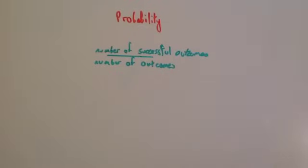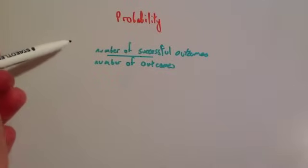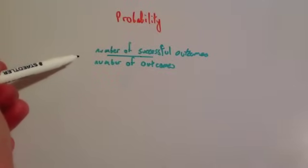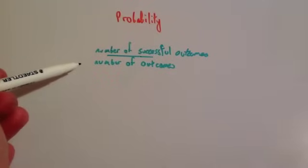In this video we're going to look at probability. The probability of an event occurring is given as the number of successful outcomes over the number of outcomes.